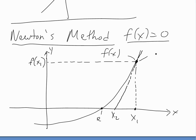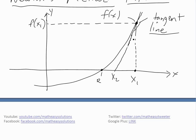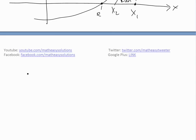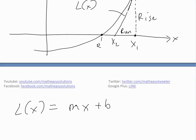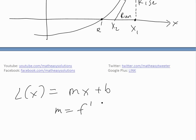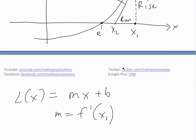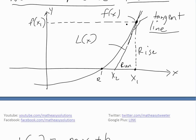We call this new intersection point x2. We can determine the equation of the tangent line — this is a simple line, and the rise over run gives us the derivative, or slope. Let's call this equation L of x. So L of x equals mx plus b, where the slope m equals the derivative f prime of x1, because the tangent line at x1 has that slope. And it's tangent to the curve, so the derivative is the same there.